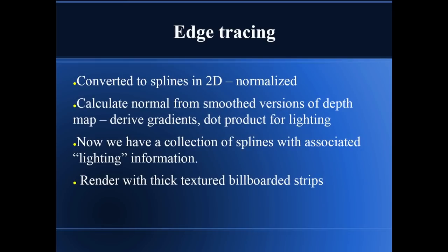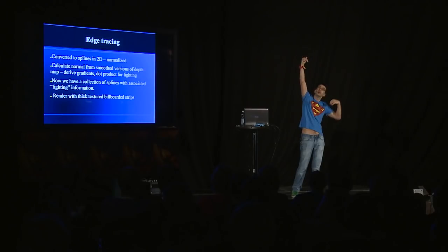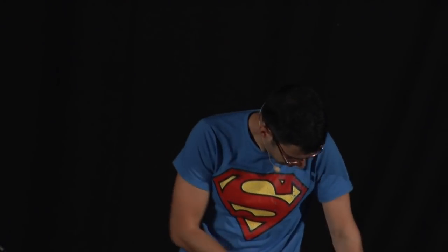From there it's straightforward: convert the splines to 2D space, normalize them so they are smooth, remove noise. You can calculate normals from the depth map, find the gradients, and do dot products. So I know that if light was there, certain areas face toward the light more than others. I can shade those areas and shade the splines — they look really nice this way.